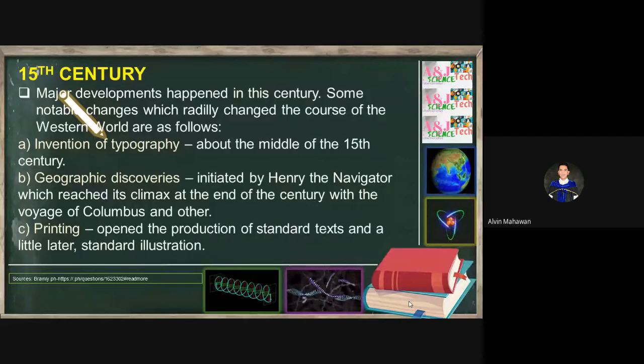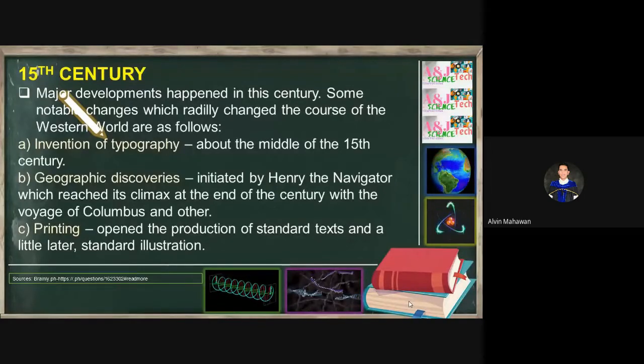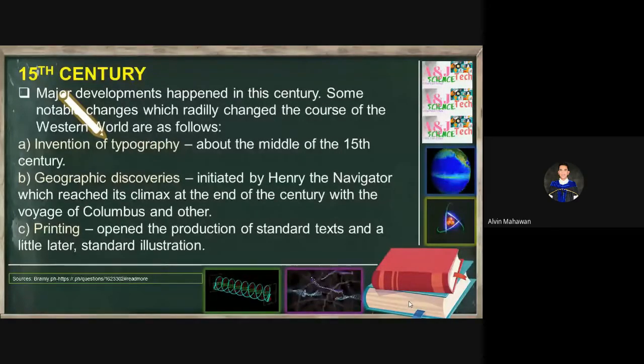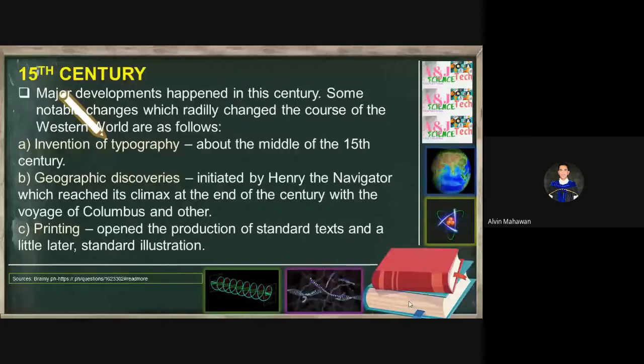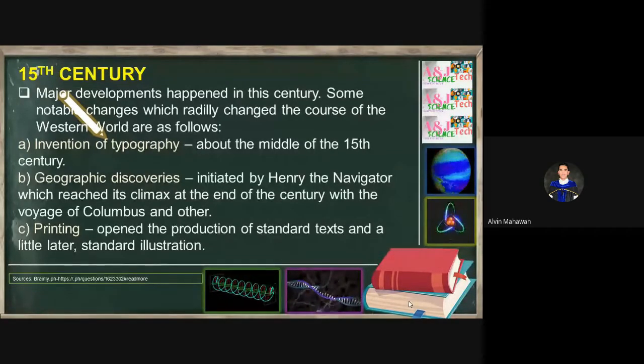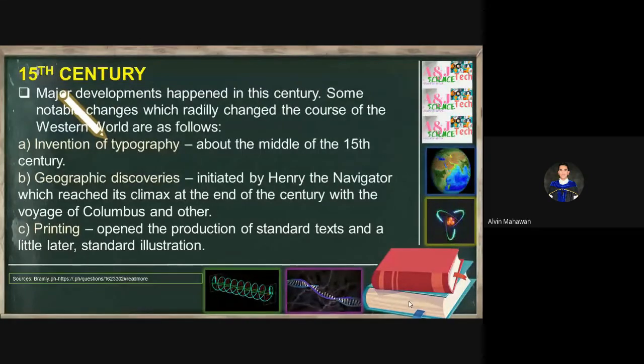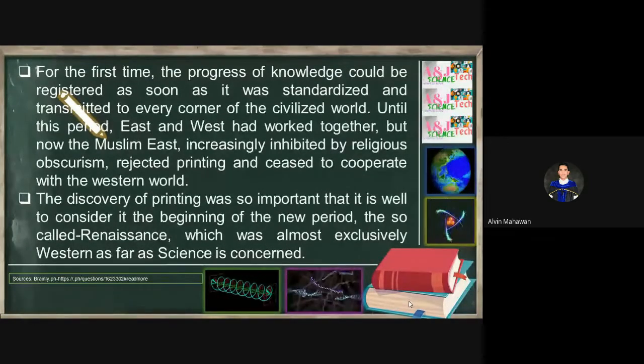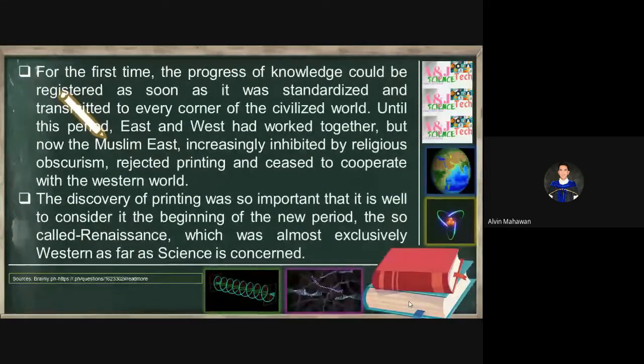In the fifteenth century, there are major developments. Some notable changes which radically changed the course of the Western world are as follows: These are important things. Invention of typography about the middle of the fifteenth century. The geographic discoveries initiated by Henry the Navigator which reached its climax at the end of the century with the voyage of Columbus and others. There is a reason why, because of their navigating abilities, they traveled around the globe. We know the contribution of Columbus on the idea that the earth is really round. That is their basic idea. Printing, the printing machine opened the production of standard text and a little later standard illustration.